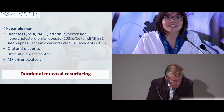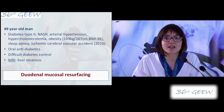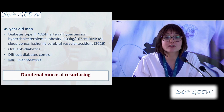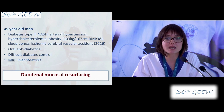Our next case is a 49-year-old man with several comorbidities: diabetes type 2, histologically proven NASH, hypertension, hypercholesterolemia, and obesity with a BMI of 38, and sleep apnea.